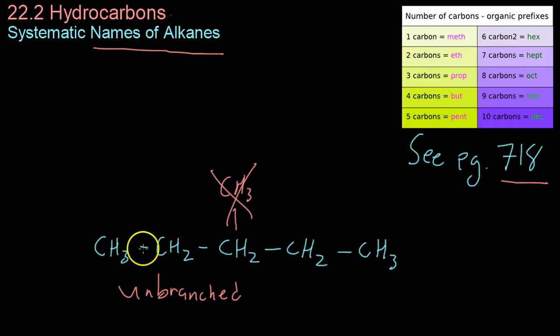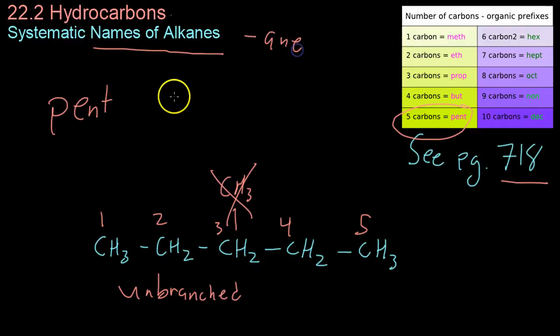If you just have what is known as an unbranched alkane, you simply count the number of carbons. In this case, you have one, two, three, four, five carbons. You go to the chart and look up the prefix. In this case, that prefix is pent. And then you add the suffix, ane, because it's an alkane. And this is the simplest nomenclature we're going to be looking at.